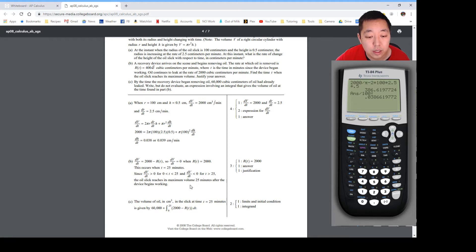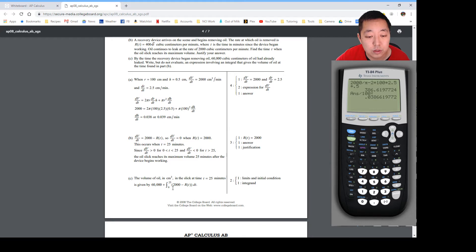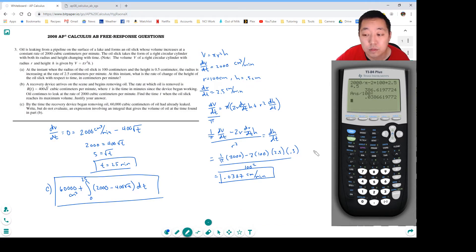And then 60,000 plus 0 to 25, 2,000 minus R of t. I just did root t there. Alright, did pretty good on that one. Hope you guys found that helpful. I'll see you in the next video when we do the non-calculator portion of the exam.